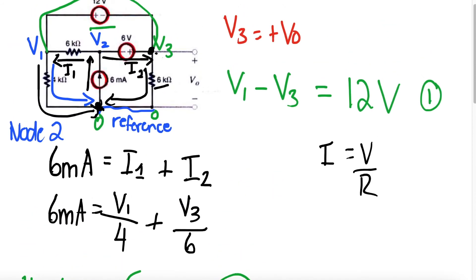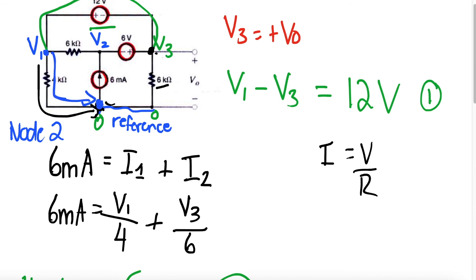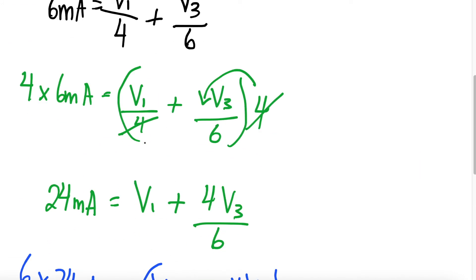We can find current I1 from node 1 to the reference node through the 4K resistor, and current I2 from node 3 to the reference node through the 6K resistor. This satisfies our KCL convention: the current entering node 2 equals the current leaving node 2.